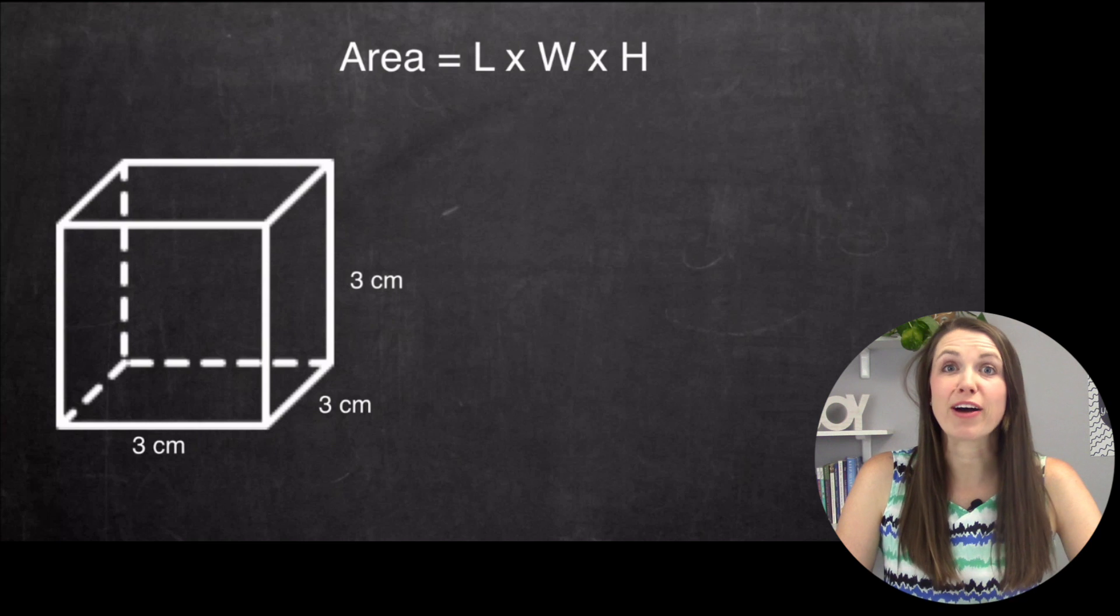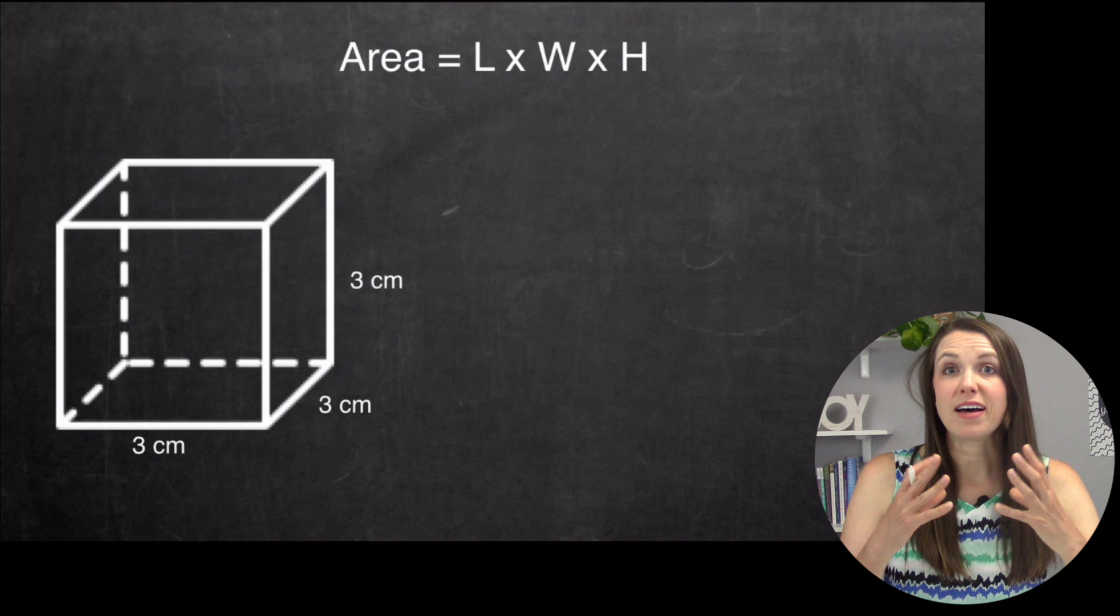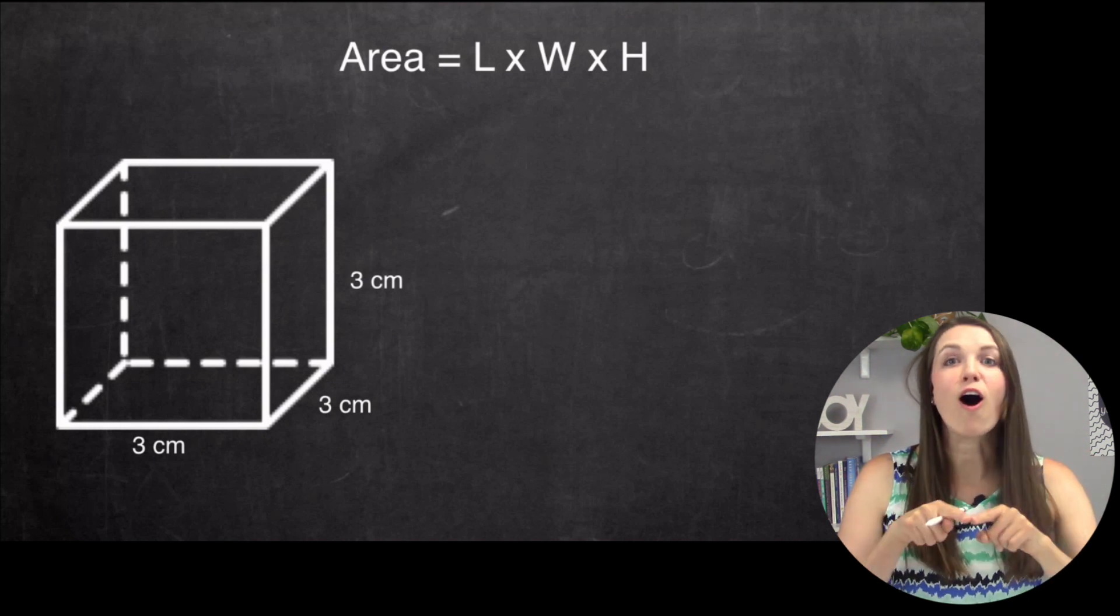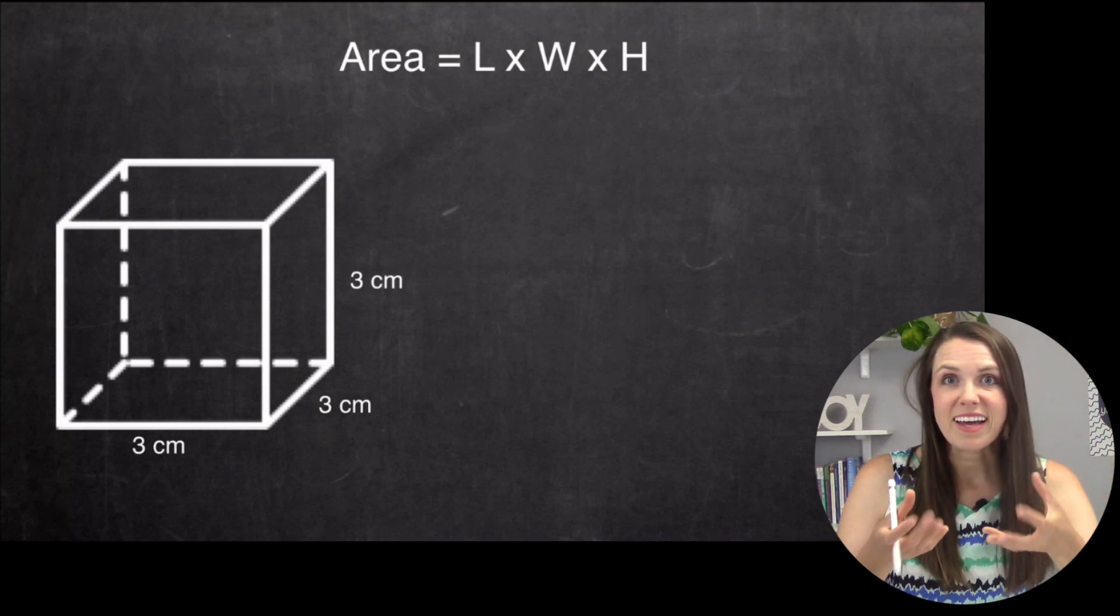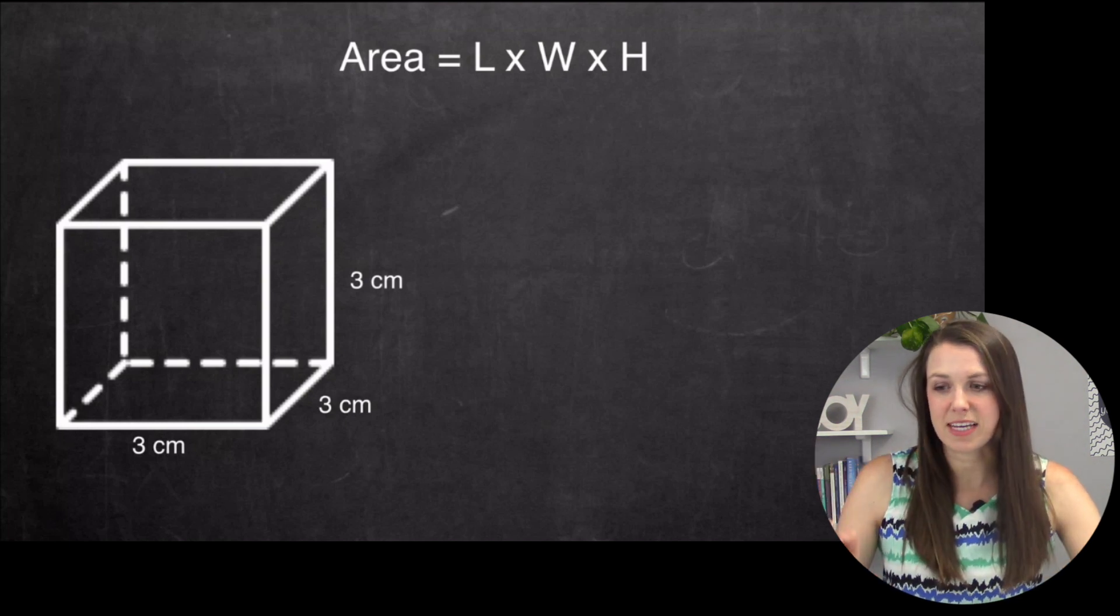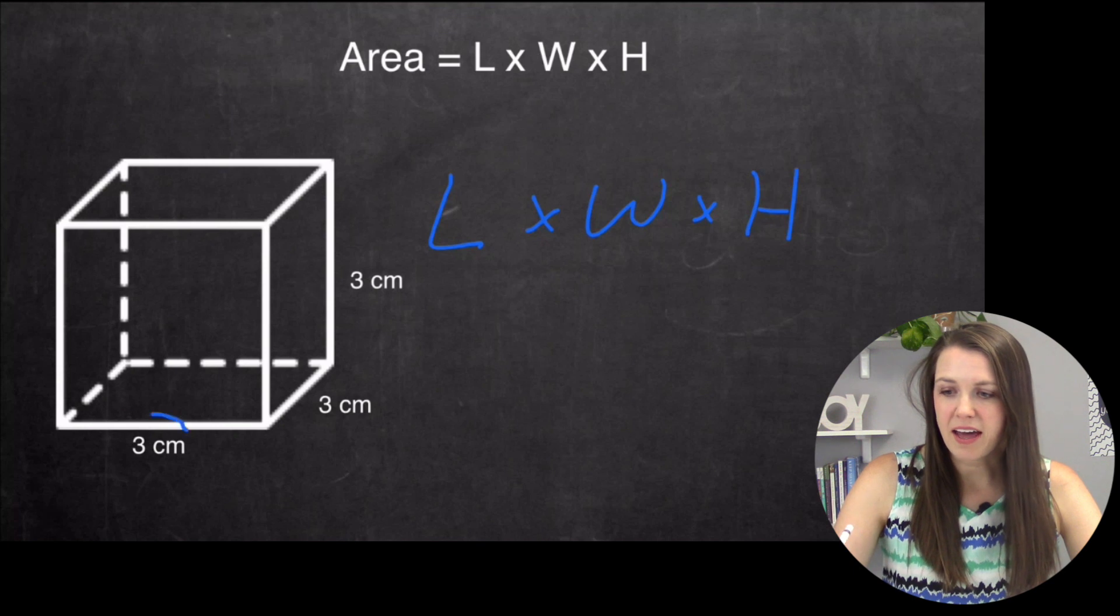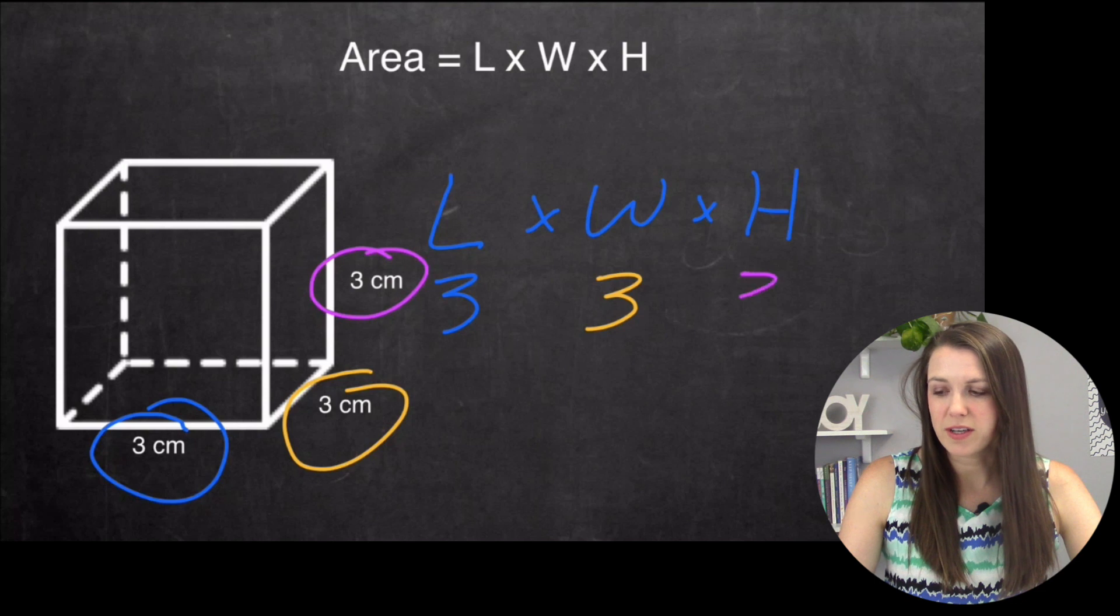The great thing about a cube is all sides are the same. Think about a dice. On a die, all of the sides are exactly the same. When you're working with a cube, the definition is all the sides are exactly the same. So what I'm going to do is go length times width times height. Here I have my length, which is three, and my width is also three, and my height is also going to be three.